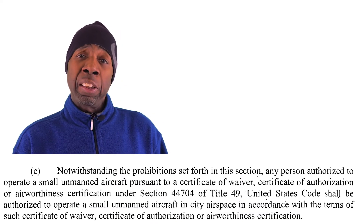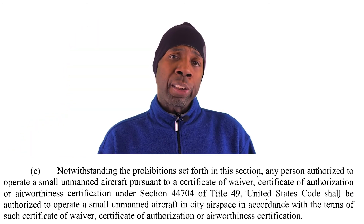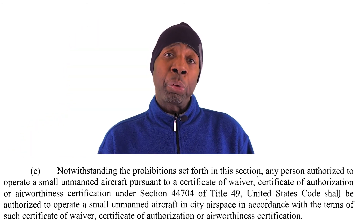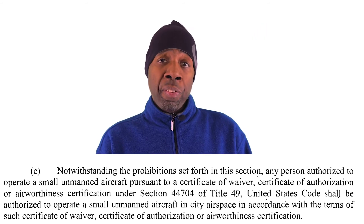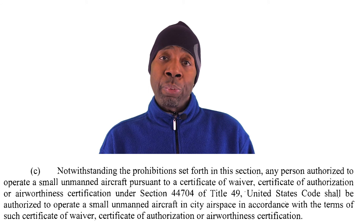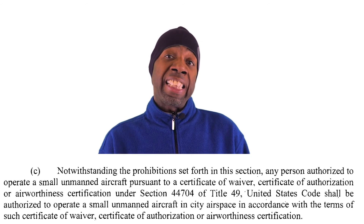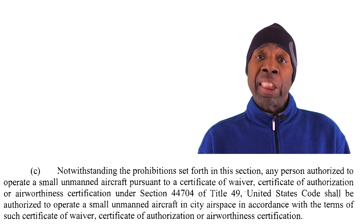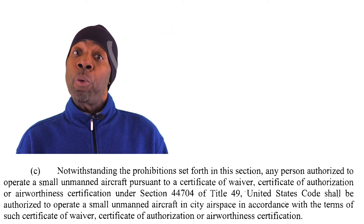Let me wrap this up with how it's easier to fly as a commercial UAS operator versus a recreational operator in Chicago. One of the sections states: notwithstanding the prohibitions set forth in this section, any person authorized to operate an unmanned aircraft pursuant to a waiver, certificate of authorization, or airworthy certification under section 44704 of title 49 United States Code shall be authorized to operate a small unmanned aircraft in city airspace in accordance with the terms of such certificate. In plain English, that means if you have your FAA Part 107 remote pilot certificate, you fly under Part 107 rules — not the Chicago ordinance.